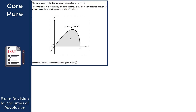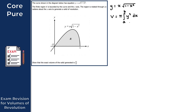Moving on to question 2. The curve has equation y equals x times the square root of 1 minus x squared. The finite region R is bounded by this curve and the x-axis, and is rotated through 2π radians about the x-axis to generate a solid of revolution. We need to show that the exact volume of the solid generated is 2π over 15. Because we're rotating about the x-axis, V equals π times the integral from a to b of y squared with respect to x.